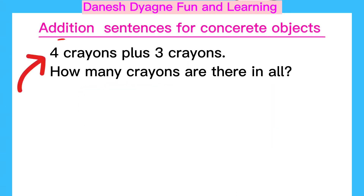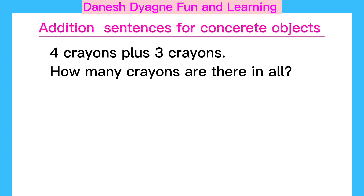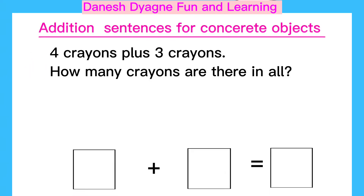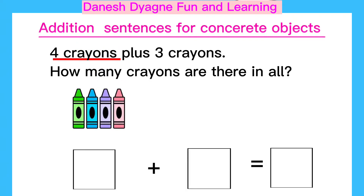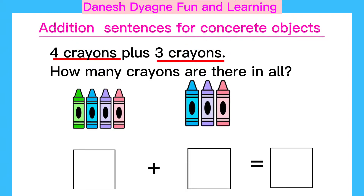Four crayons plus three crayons. How many crayons are there in all? So we have four crayons plus three crayons. We will write here four, and here is three.